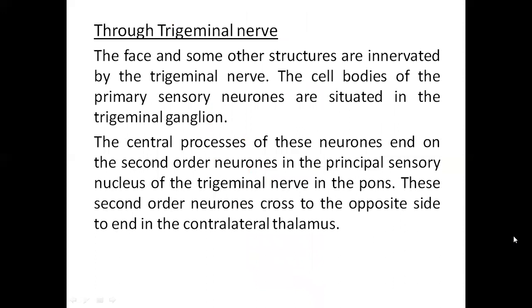Through the trigeminal nerve, the face and some other structures are innervated. The cell bodies of primary sensory neurons are situated in the trigeminal ganglion. The central processes of these neurons end on the second order neurons in the principal sensory nucleus of the trigeminal nerve in the pons. These second order neurons cross to the opposite side to end in the contralateral thalamus.